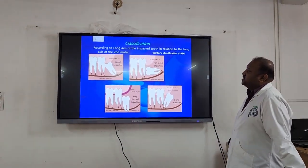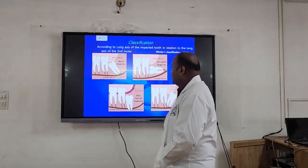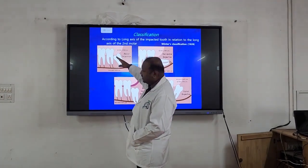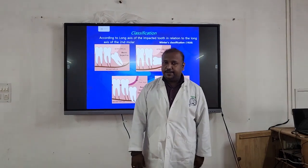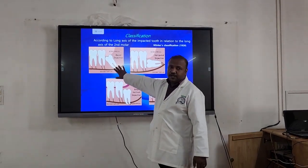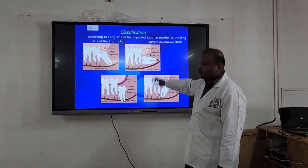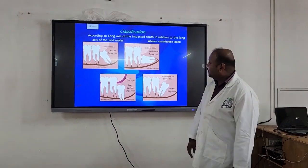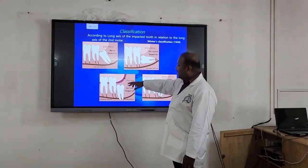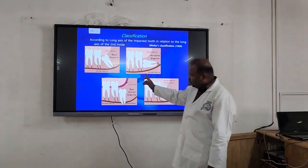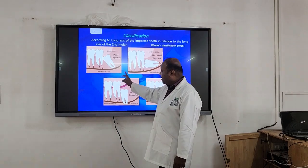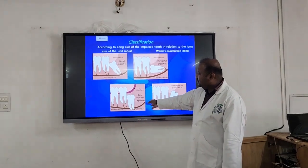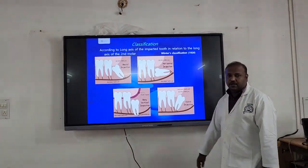This is the representation of the classification. In mesio-angular impaction, you can see that the angulation increases between the long axis of the second molar and the long axis of the third molar. When the long axes of the second molar and the third molar are parallel to each other, then we call it a vertical impaction. And then we have disto-angular impaction.